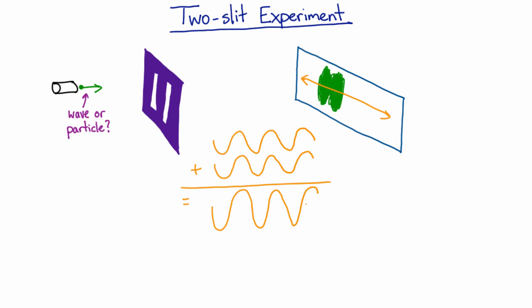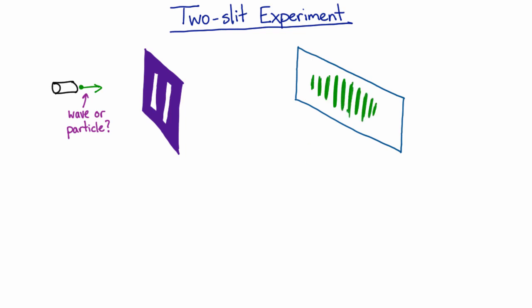Whereas if these are out of phase, then what you get is basically nothing. And so the net result is that if you have something going through two slits and it's a wave, what you're going to see are regions of bright and dark bands. And the bright bands will be where you have constructive interference, and the dark bands will be where you have destructive interference.